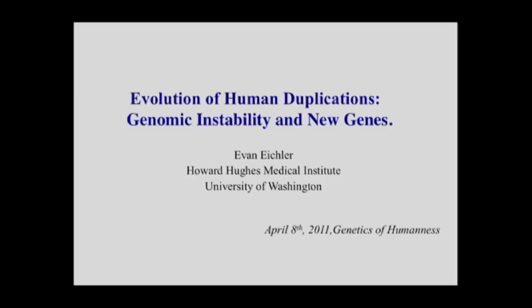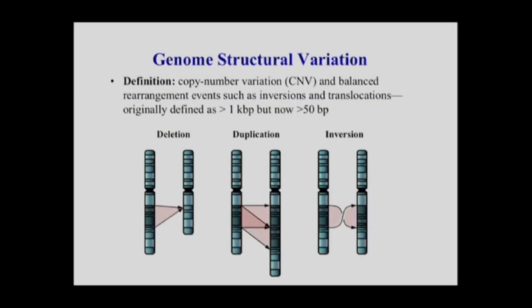While we've talked a lot about single nucleotide variation, roughly the last 15 years my lab has been interested in larger forms of genetic variation: deletions, duplications, and inversions, particularly down to the level of about one kilobase in size. More recently with the advent of new technologies, we've been able to push this down to about 50 base pairs in terms of size.